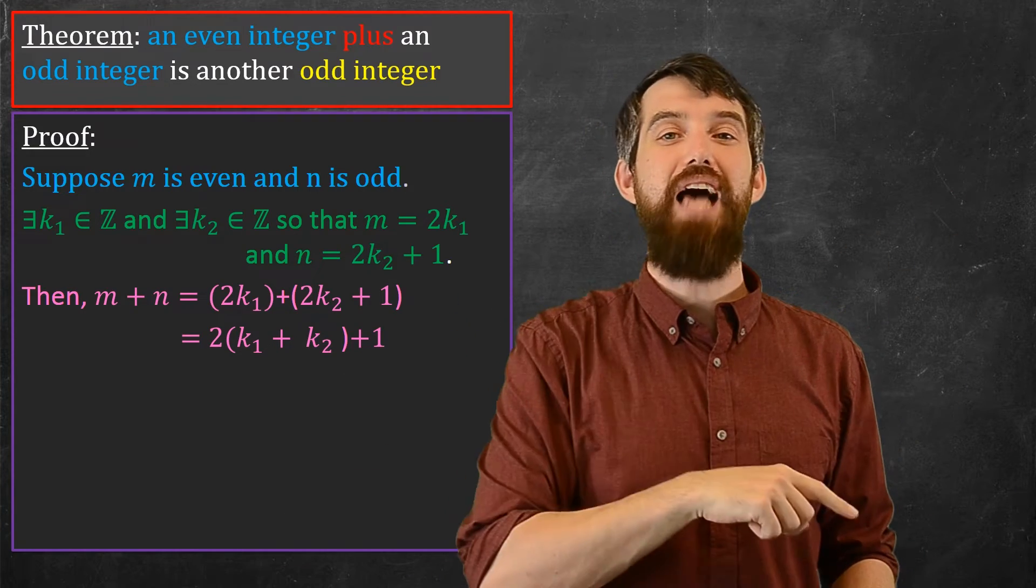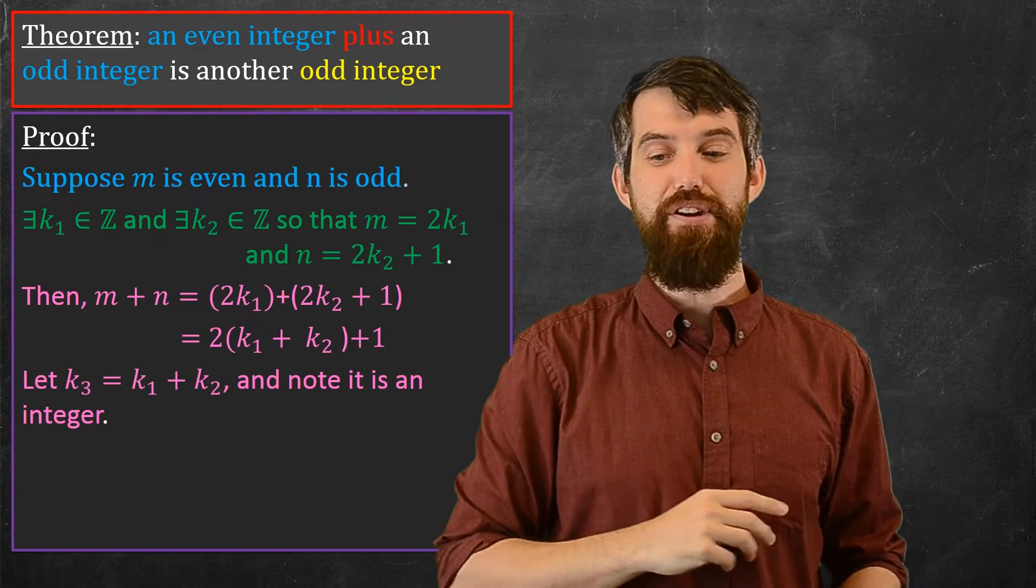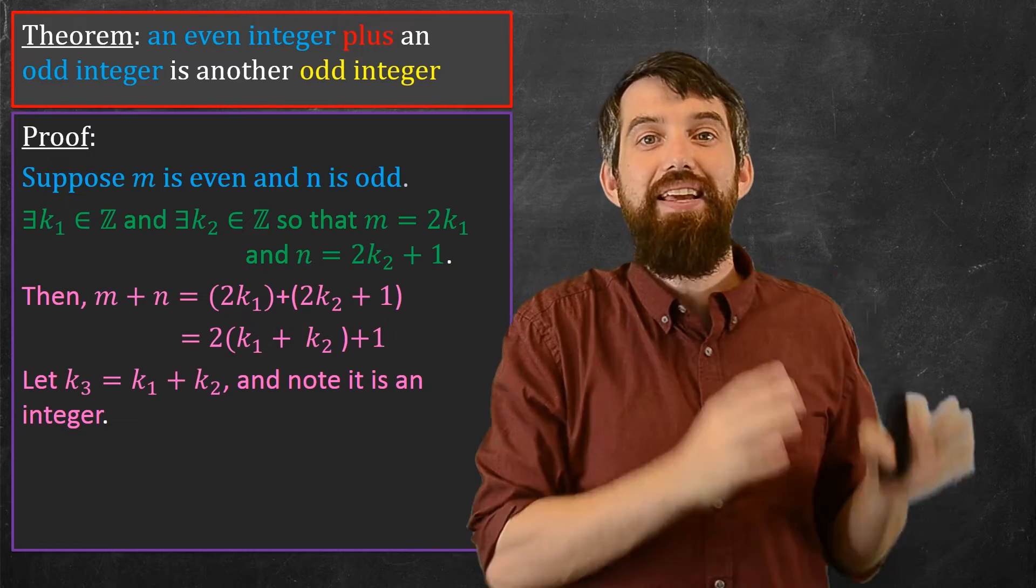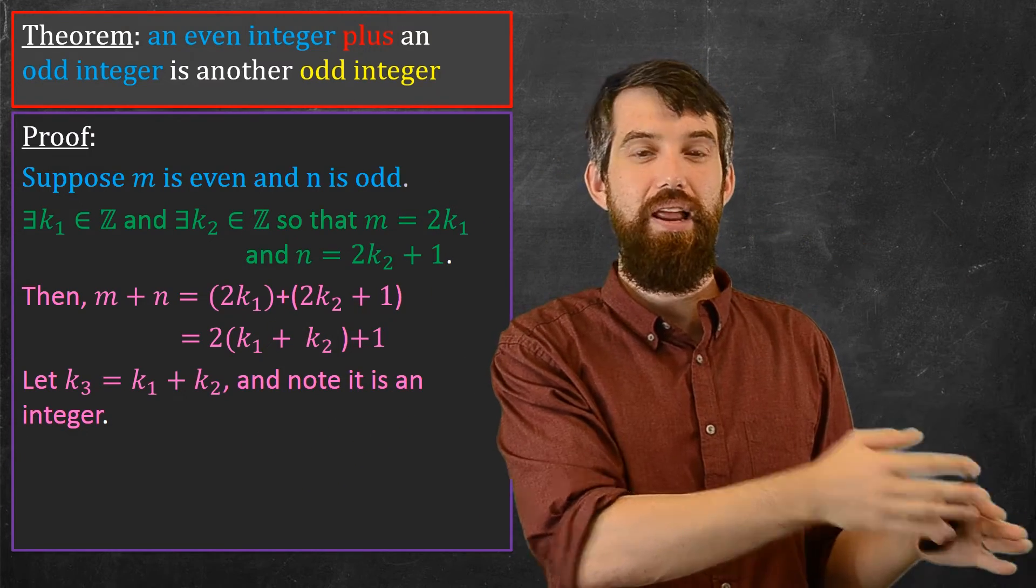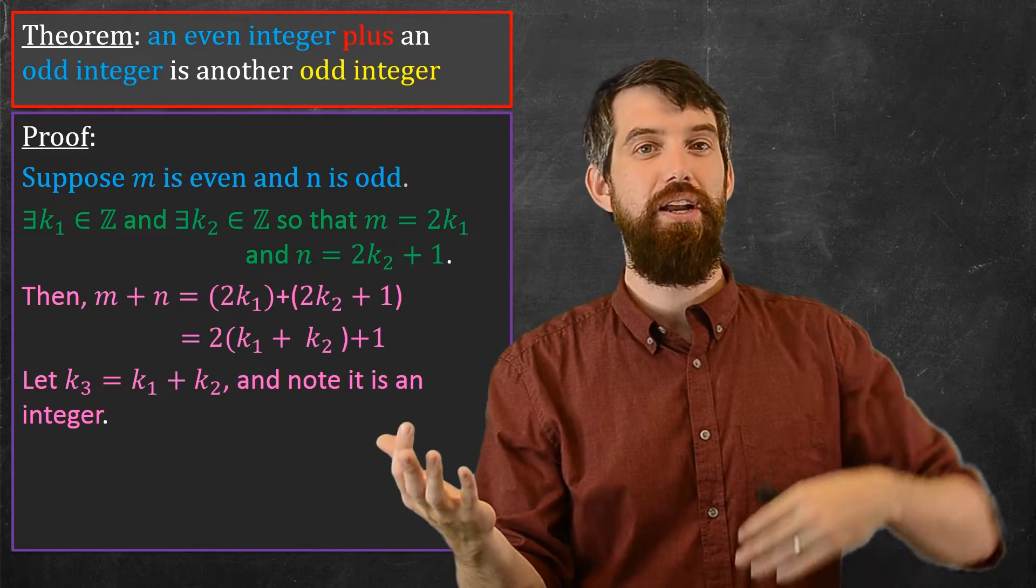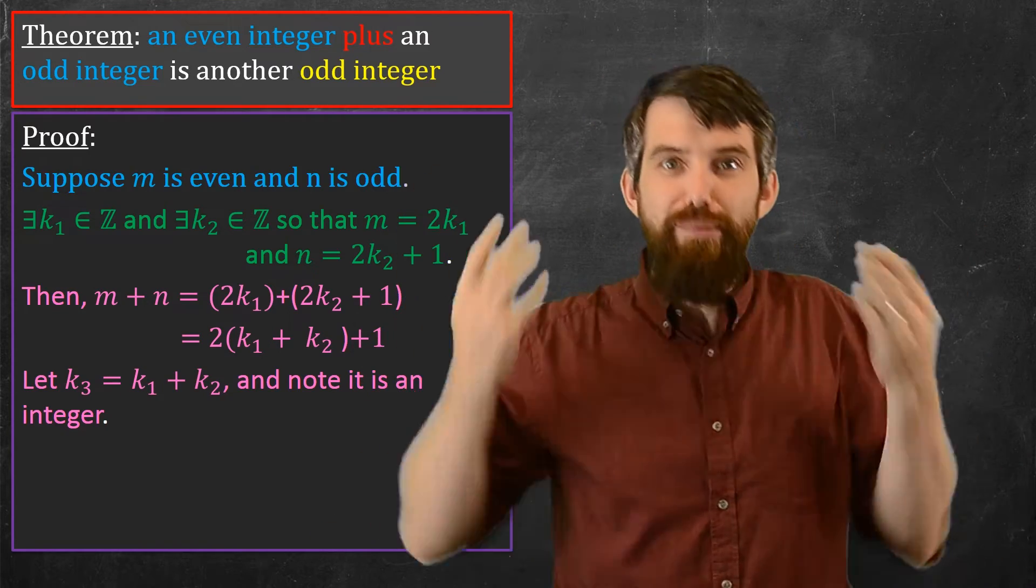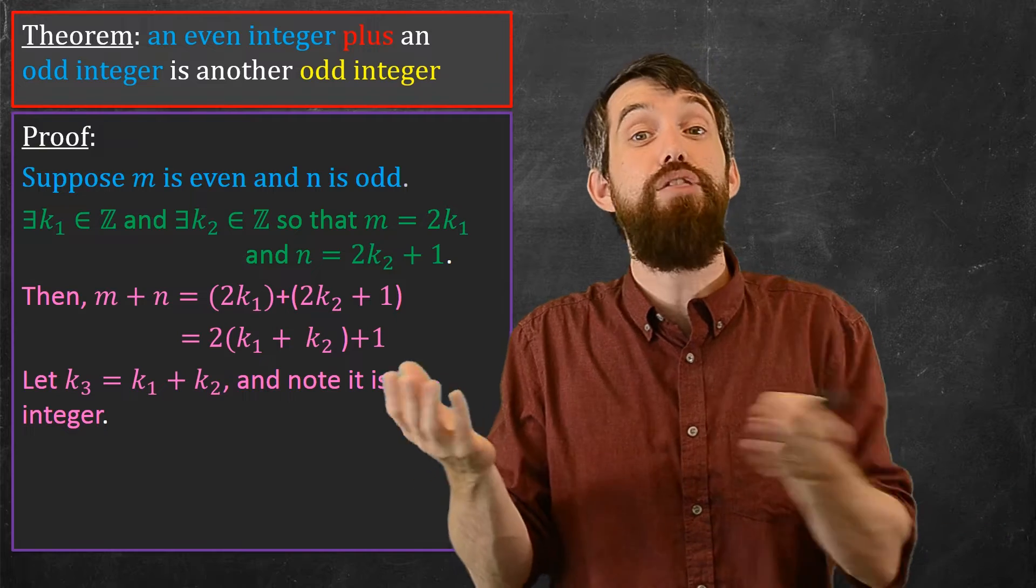So what I'm going to do is define a third k, I'm going to define a k3, and the k3 is the sum of the k1 and the k2. And then by the way, since k1 was an integer, and k2 is an integer, and the sum of two integers is an integer, k3 is also an integer.